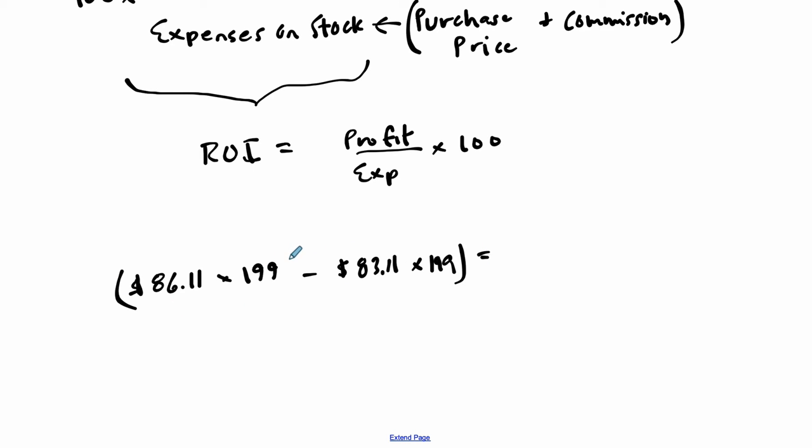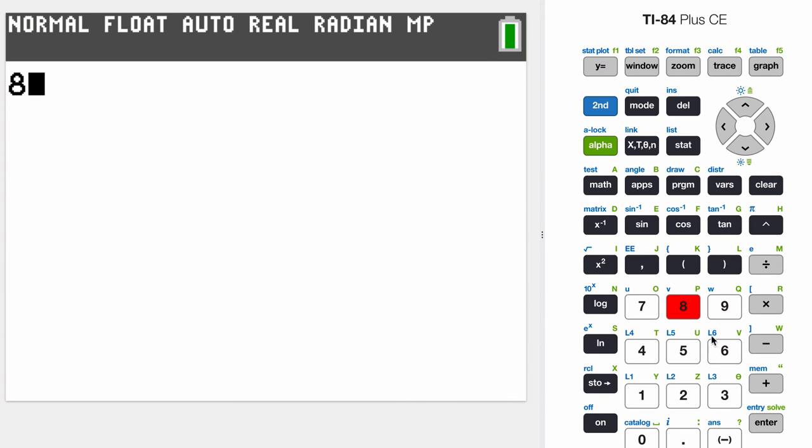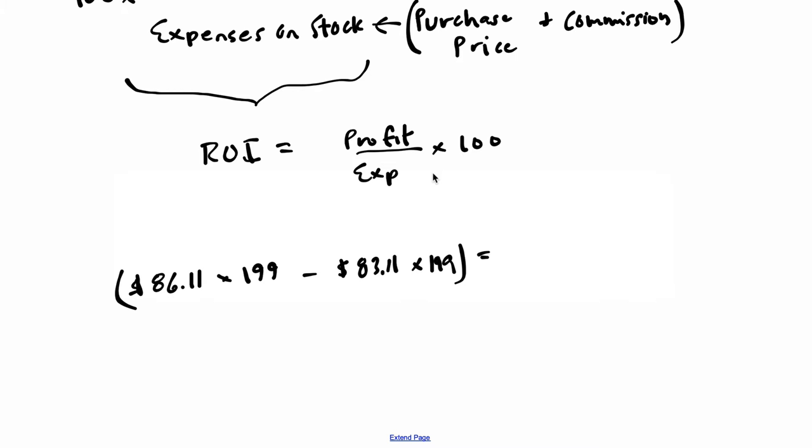So you could factor out 199. In other words, you can just do $86.11 minus $83.11 first and then multiply that value by 199. Or you could do $86.11 times 199 minus $83.11 times 199. Do whatever works for you. I'm going to clear this off and put $86.11 minus $83.11. And of course, that's $3 times 199. So it's $597. That's our capital gain.